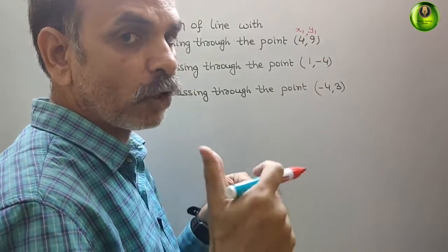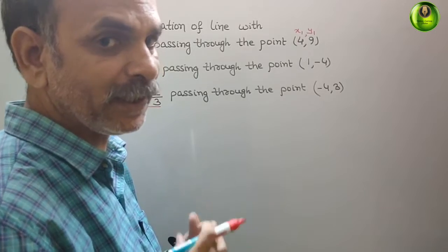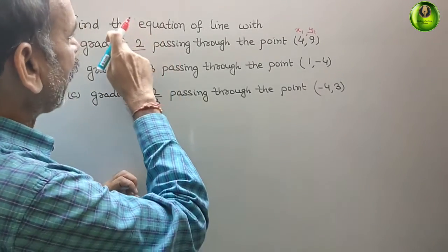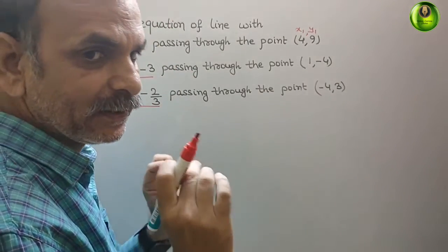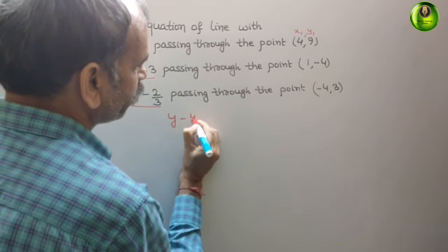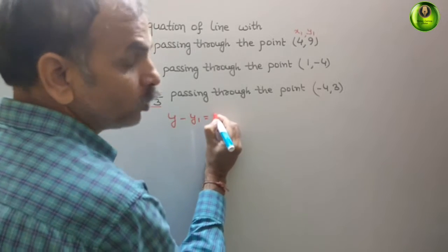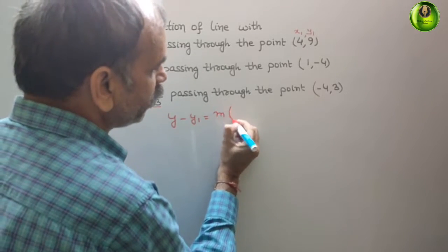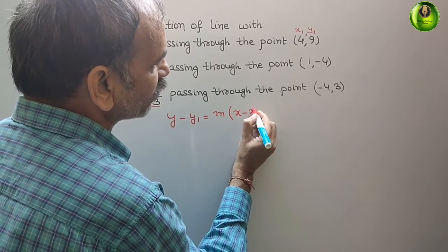Now, comes to your formula. It is that, if you are writing the equation of a line, then the formula is y minus y1 is equal to m into x minus x1.